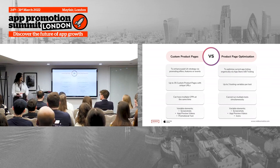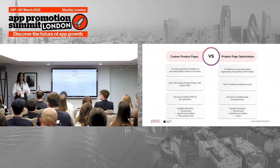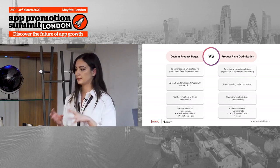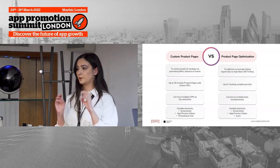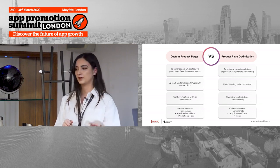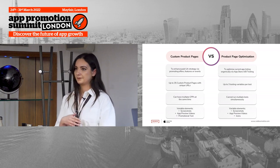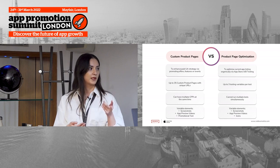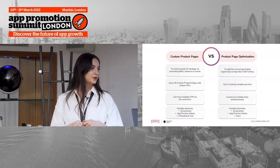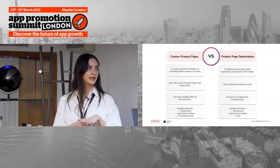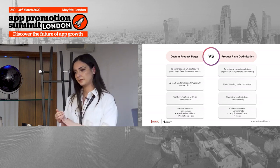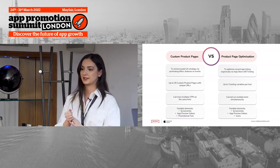Before going into more in-depth strategies, we want to outline the main differences between custom product pages and product page optimization, because they can get mixed up as both are new functions. Custom product pages enhance your paid UA strategy via targeting keywords or showcasing features and events. Product page optimization is to optimize your current app listing organically via A/B testing on iOS. You can have up to 35 custom product pages with unique URLs, but for product page optimization you can only run one test at a time with up to three different variables — so it's really A/B/C/D testing.